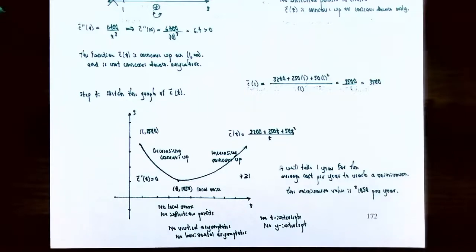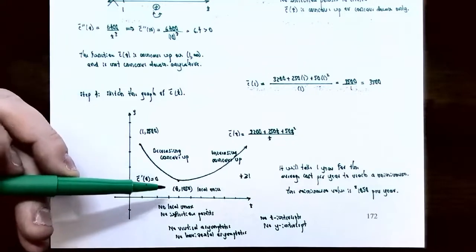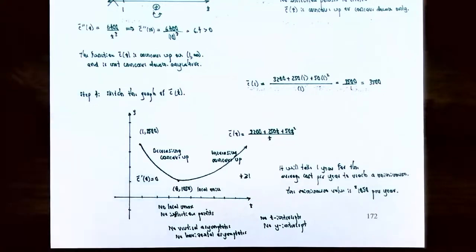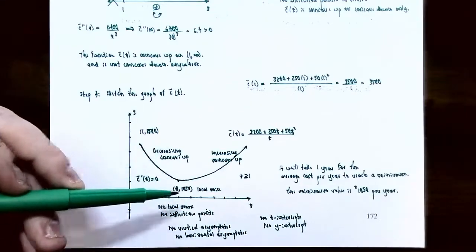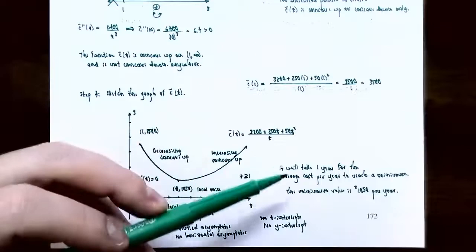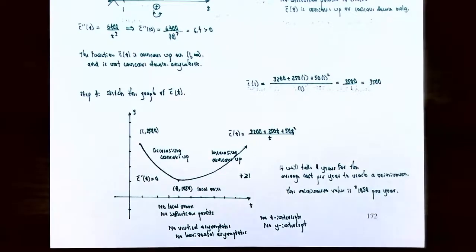Now let's answer the second part of the problem. How long does it take for the average cost per year to reach a minimum? It takes t = 8 years. And what is the minimum average cost per year? The minimum average cost is $1,050. So it will take 8 years for the average cost function per year to reach its minimum value of $1,050.